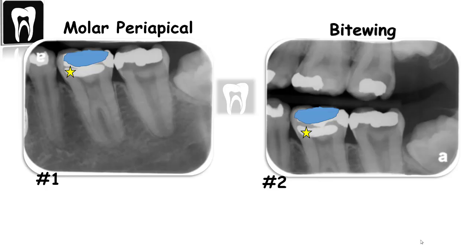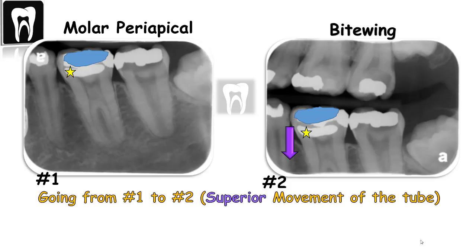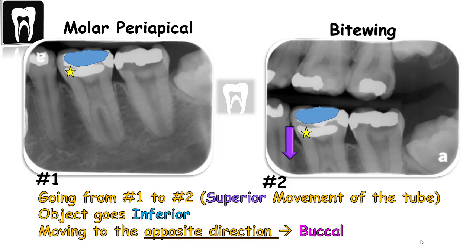Next, determining where the image of the unknown object — the star — moves in relation to the fixed object, the occlusal metallic restoration, from image number one to image number two. The metallic restoration marked with the star moves inferior from image one to two compared to the occlusal metallic restoration. Using the SLOB technique, this shows that the unknown object moves in the opposite direction as the image goes from one to two — the tube goes up and the metallic restoration goes down — so the metallic restoration marked with the star is positioned on the buccal of the tooth.